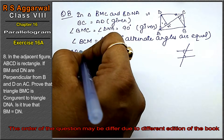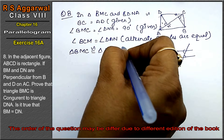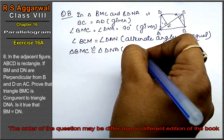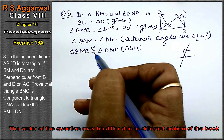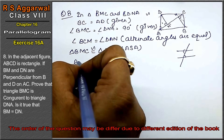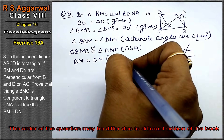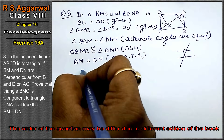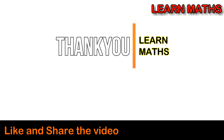So triangle BMC is congruent to triangle DNA by the AAS rule. Therefore BM equals DN by CPCT. The answer is proved. Thank you. If you understood the step-by-step solution in this video, please subscribe to my channel Learn Maths and share it with your friends. Thank you.